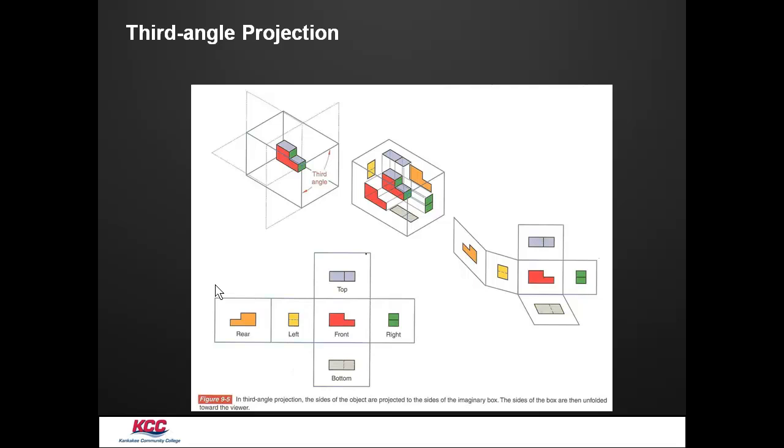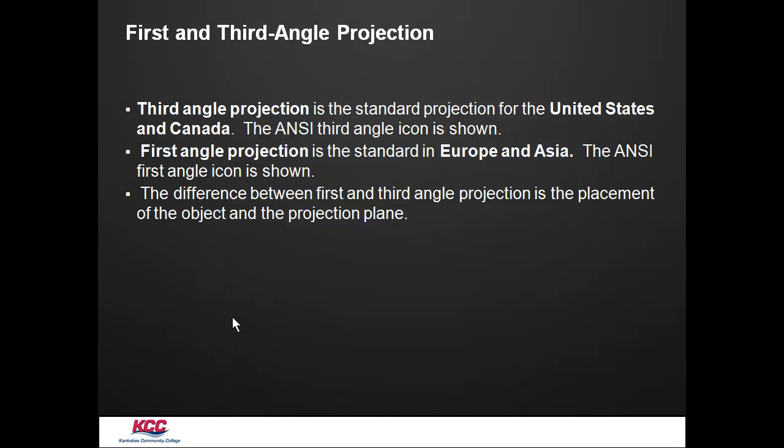This is known as third angle projection. That is how the glass box is unfolded, where it's unfolded so that the front is here, the top and bottom are above the front, the right is to the right of the front, the left is to the left, and the rear is to the left of the left. This is used in the United States.